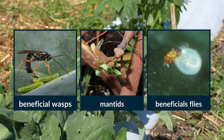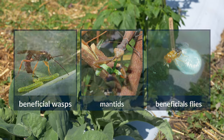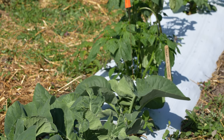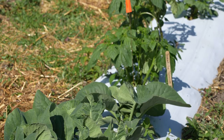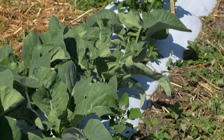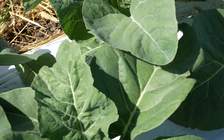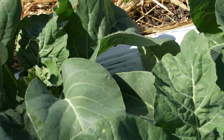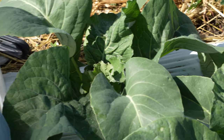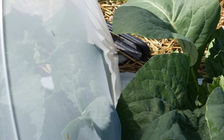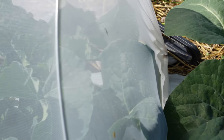You could also introduce biological control agents like beneficial nematodes, which may specifically target cabbage loopers. Use floating row covers or insect netting to physically exclude cabbage loopers from accessing your plants.